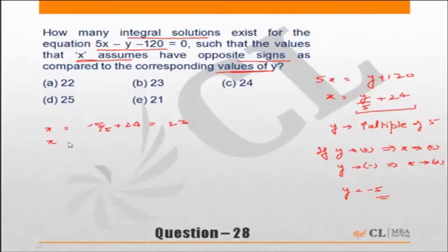Next after -5, I will take -10. -10/5 + 24 = 22. So it will keep reducing by 1. Till which point can you go?